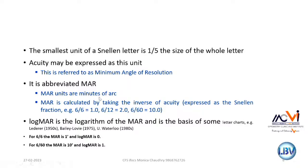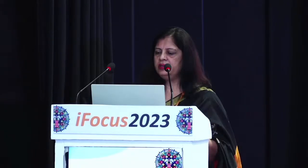MAR units are conversions in minutes of arc, and LogMAR is the logarithm of MAR — upon which ETDRS and Bailey-Lovie charts are constructed. For normal vision of one minute of arc at the nodal point, the log of one equals zero, so 6/6 corresponds to a LogMAR of 0.